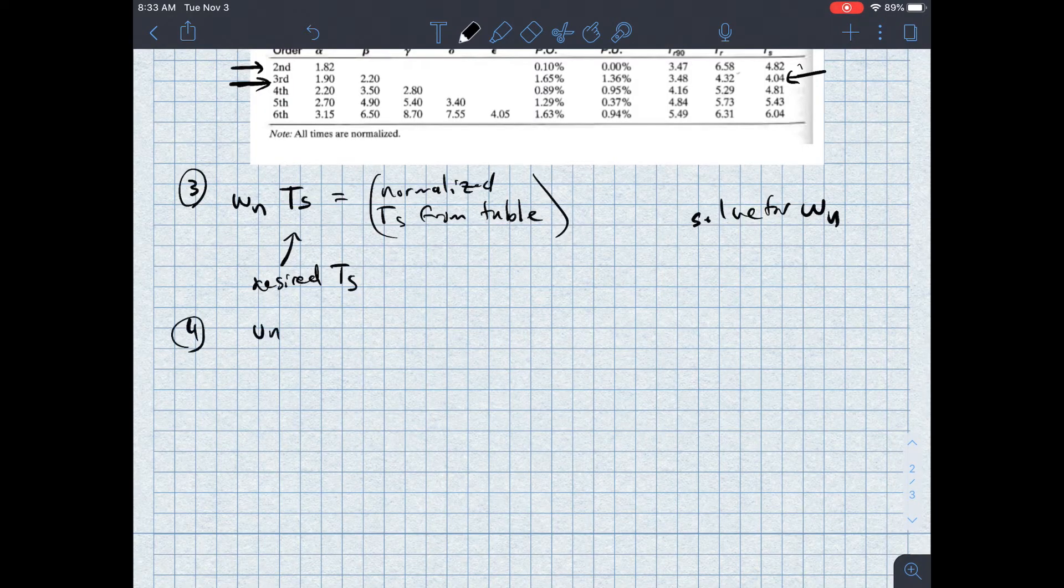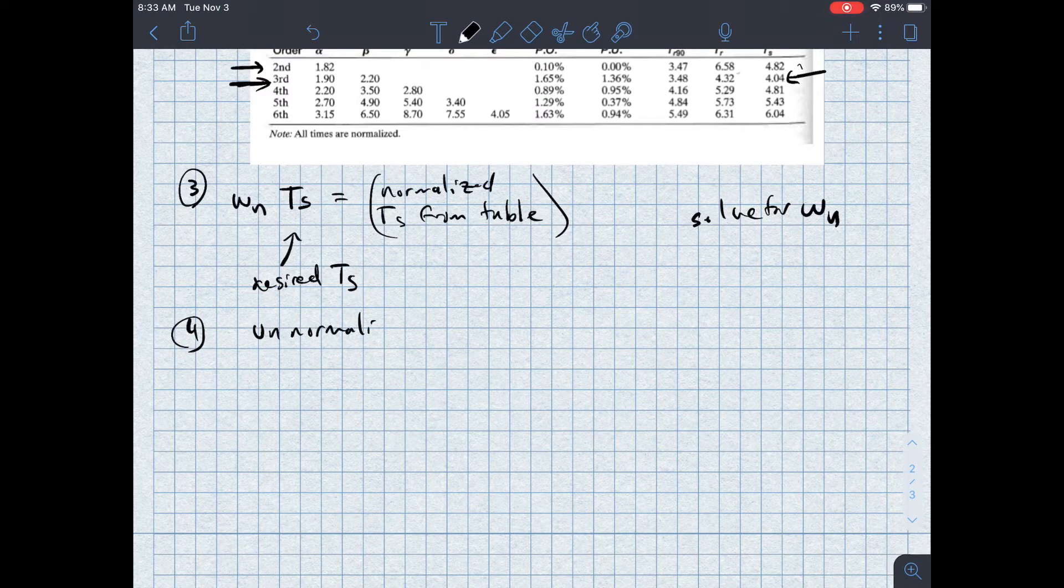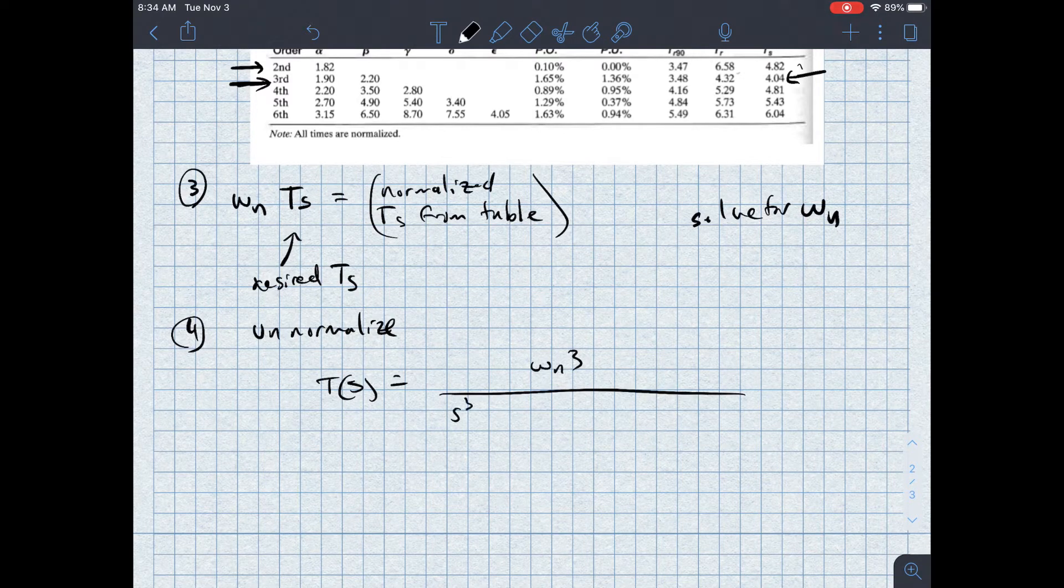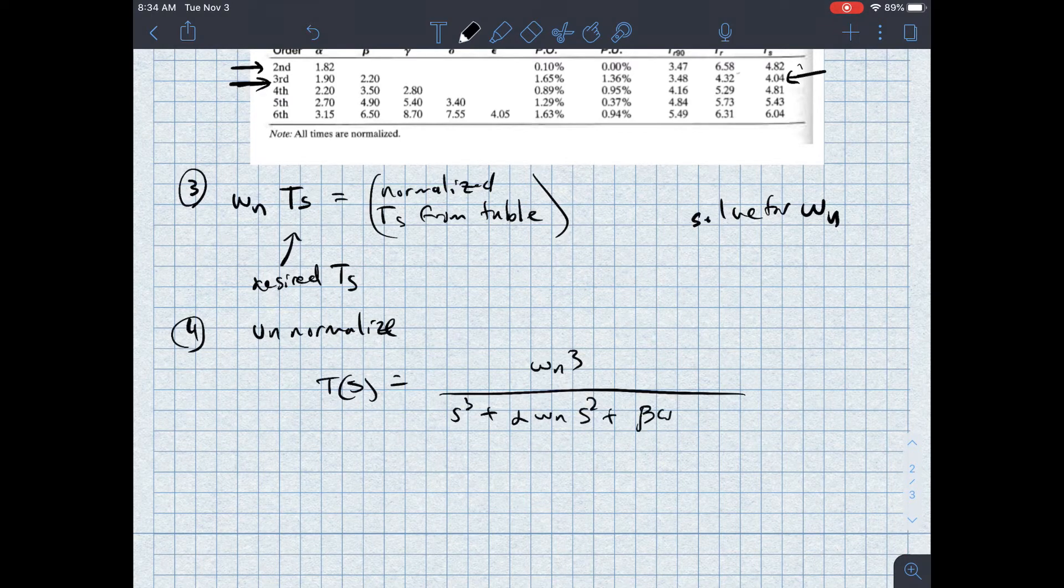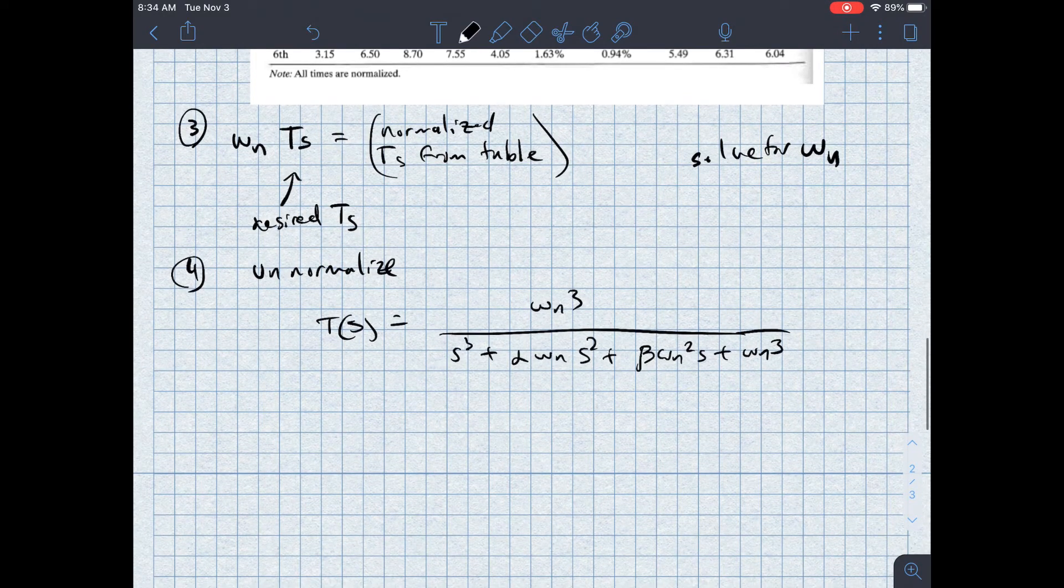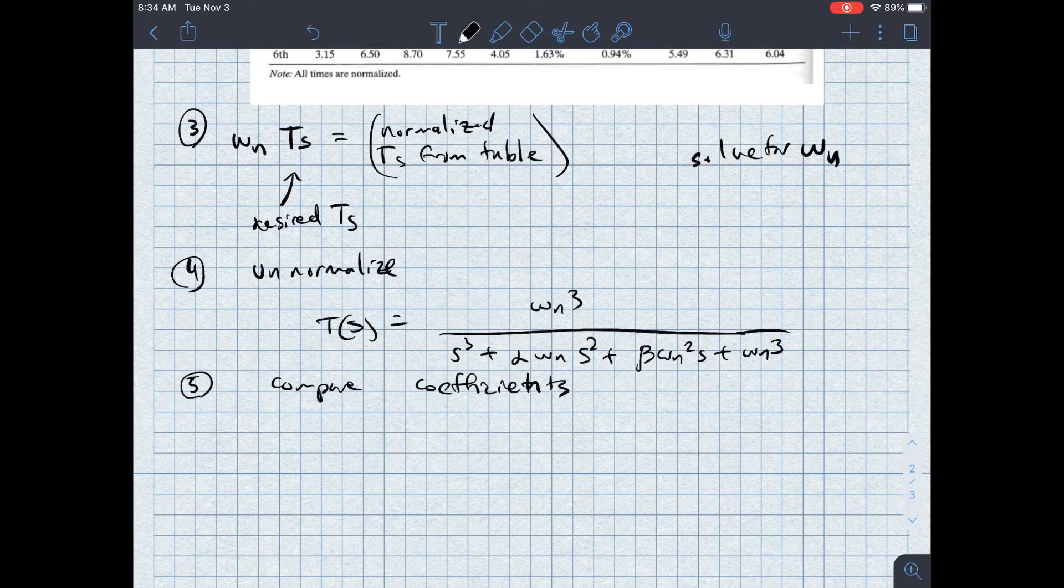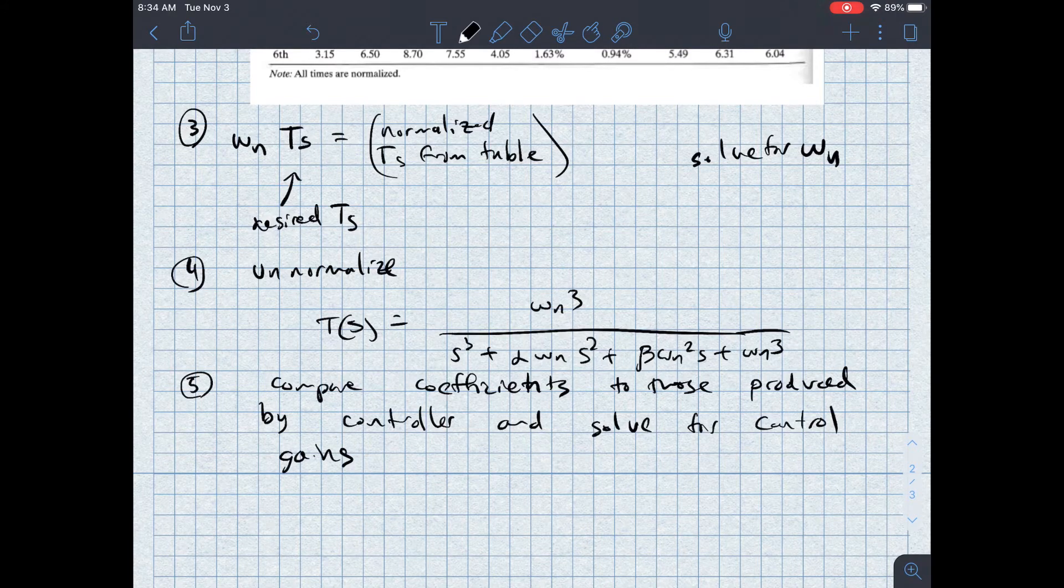Step four is to un-normalize. So then I've got T of S is equal to omega N cubed over S cubed plus alpha omega N S squared plus beta omega N squared S plus omega N cubed. And then I'm going to compare my coefficients to those produced by a generic controller and solve for the controller values. We'll compare this to those produced by a controller and solve for the control gains.